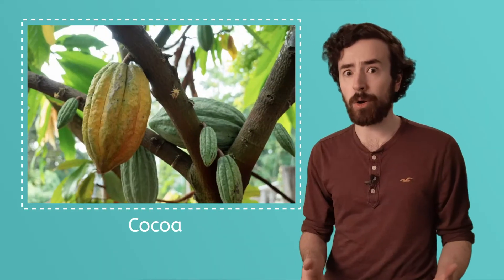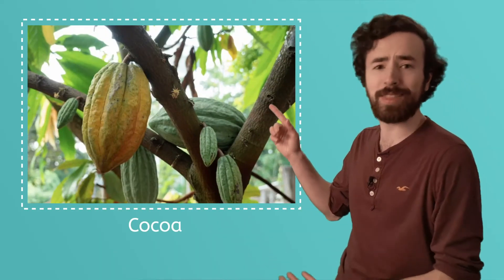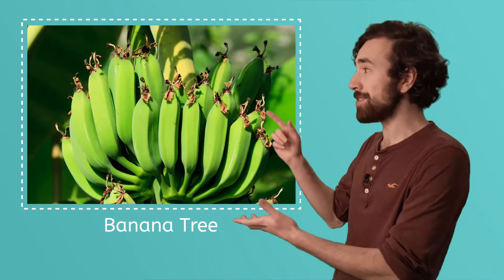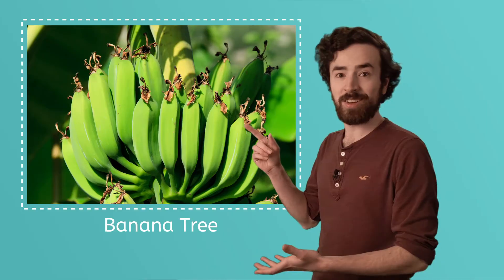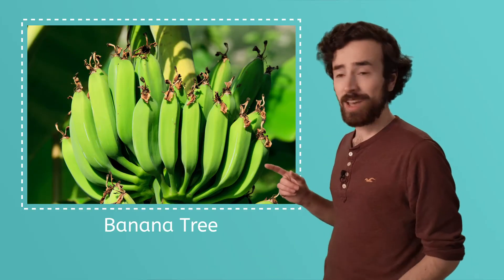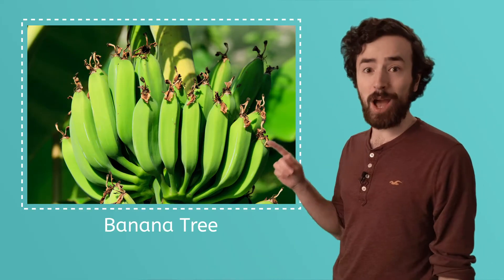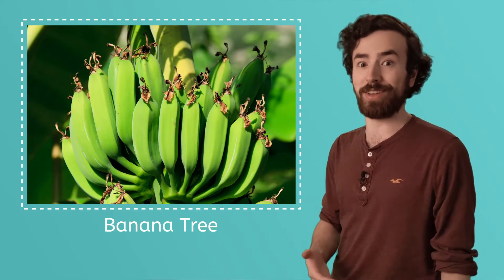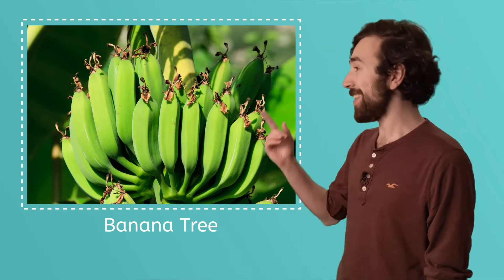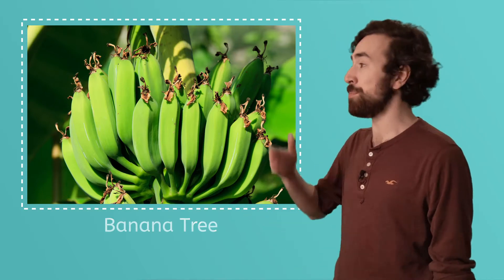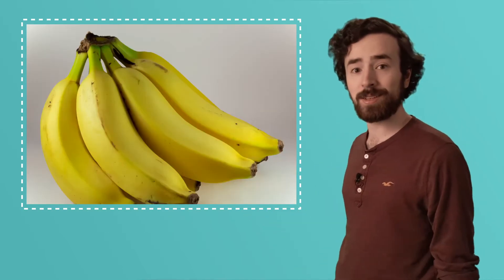We get cocoa from pods that look like this. And this is a banana tree. Those green things on the tree are bananas. Yeah, that's what they look like before they come to your home looking like this.